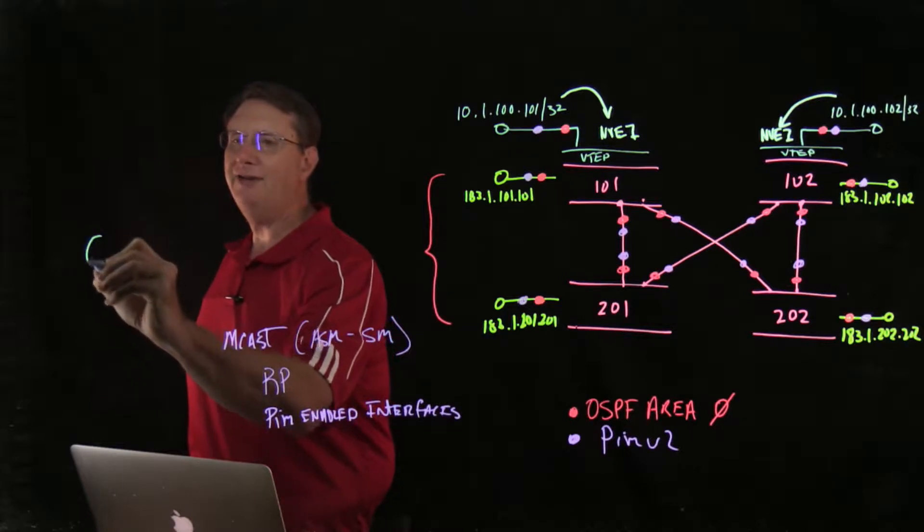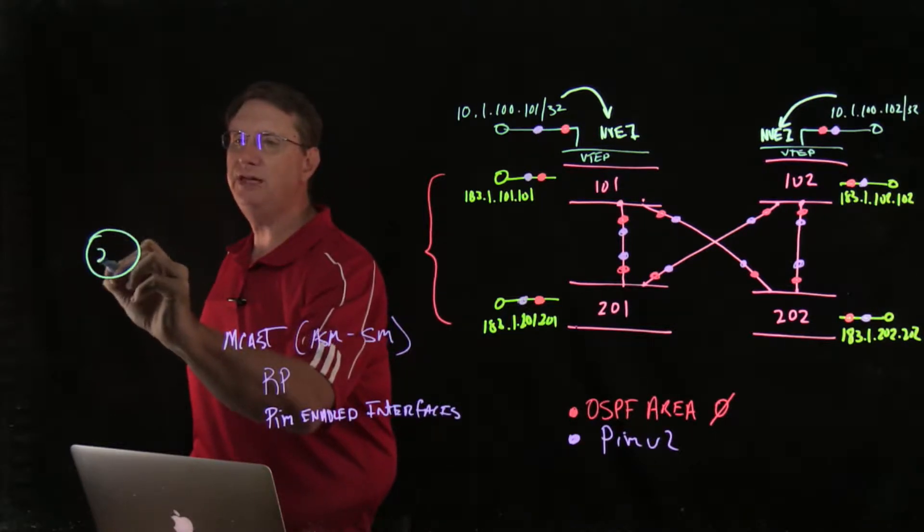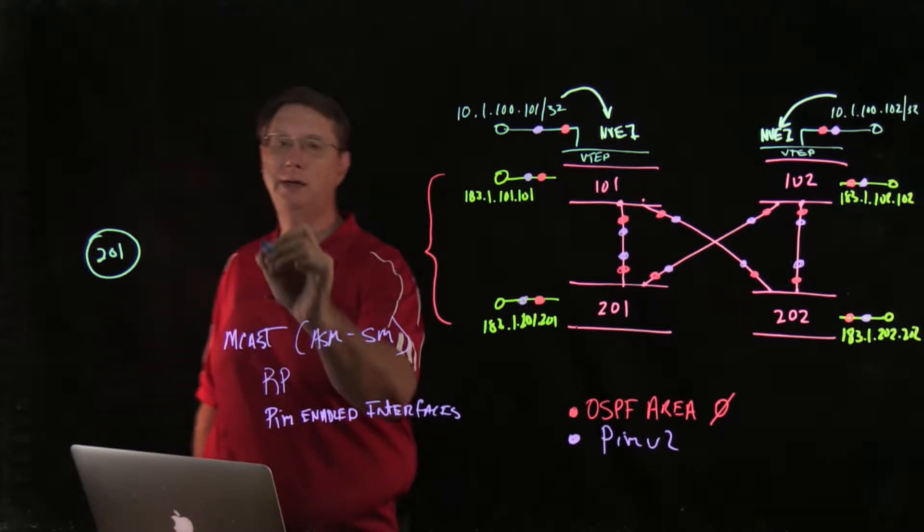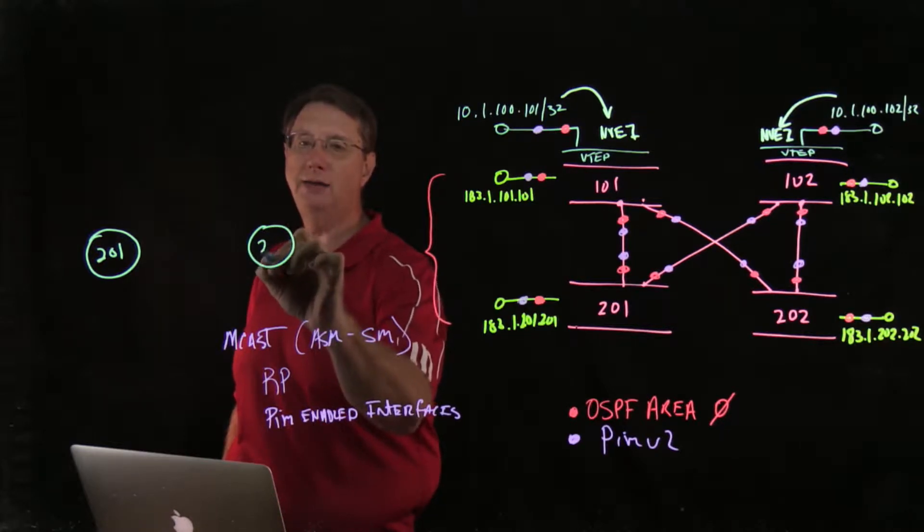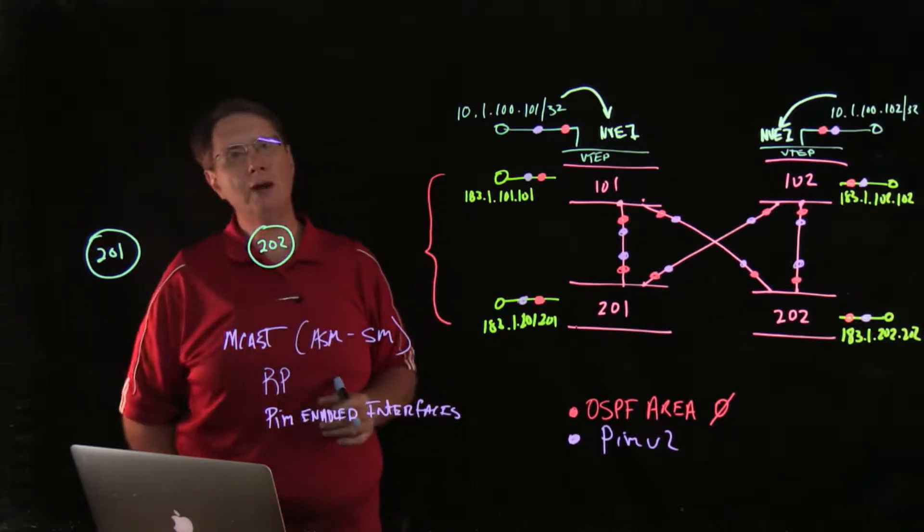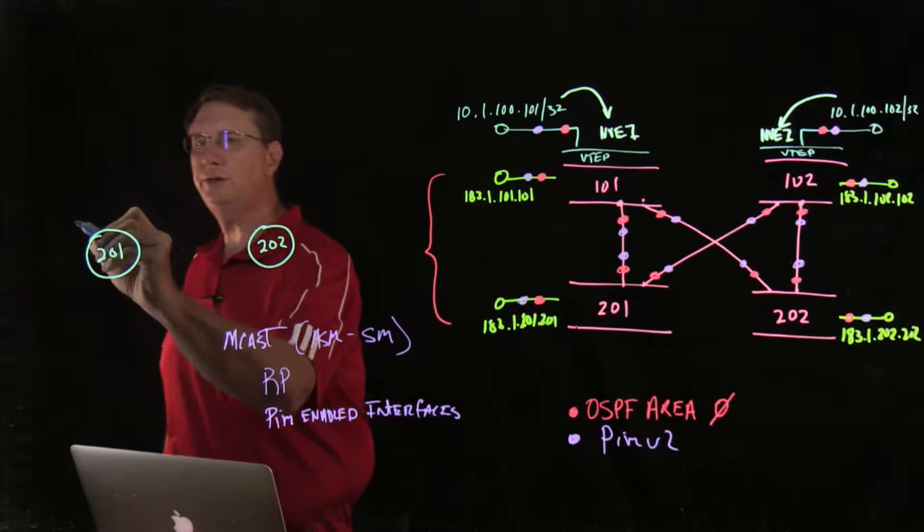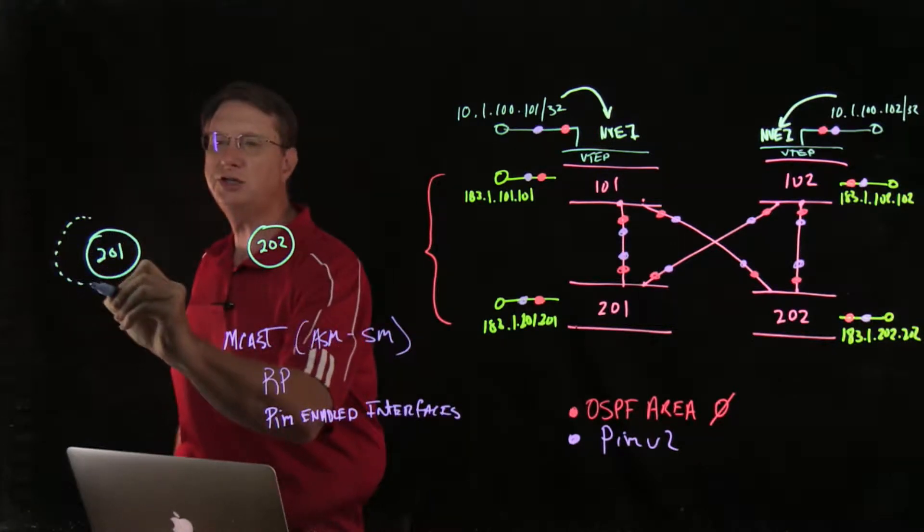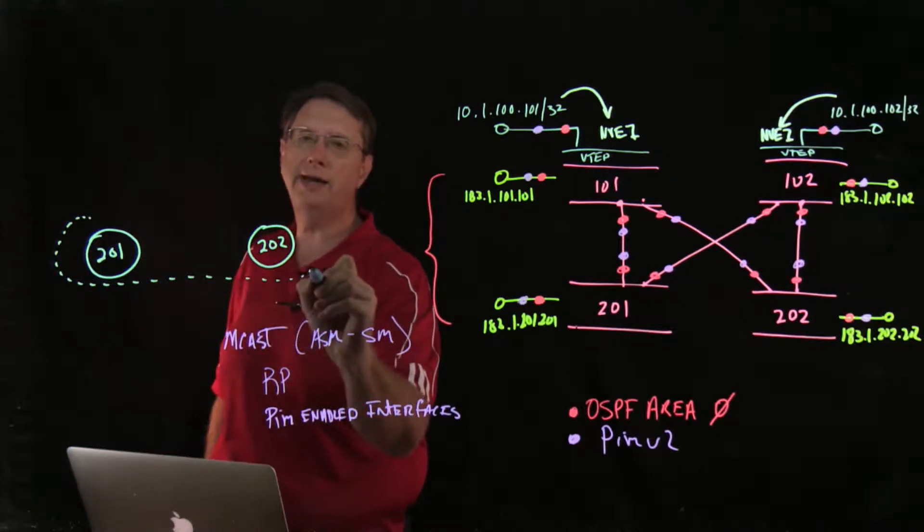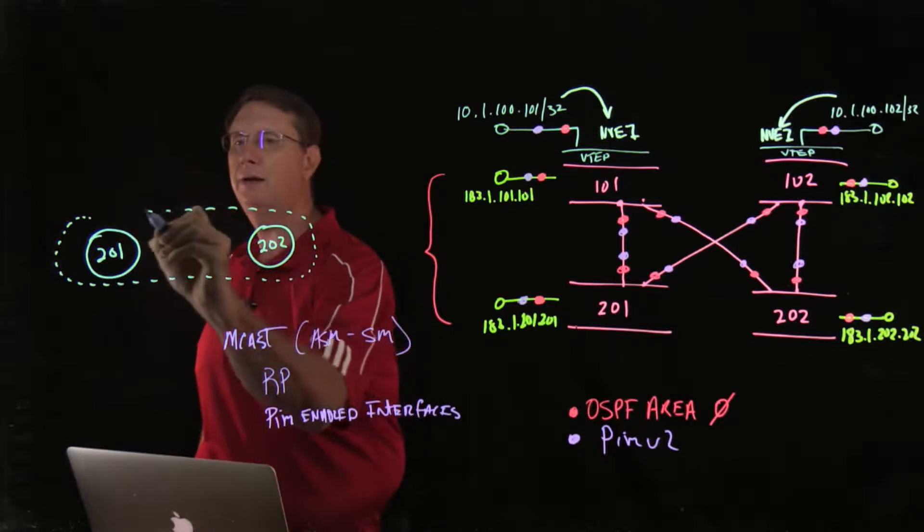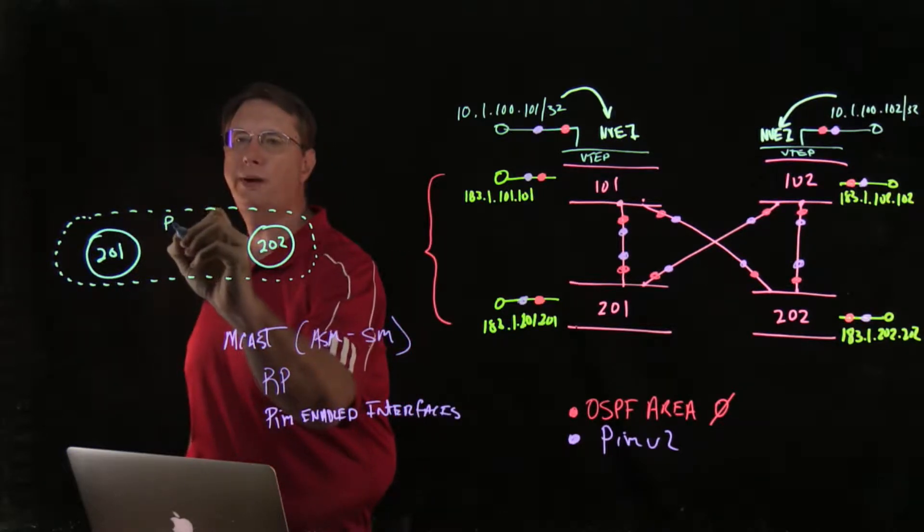What we have in our infrastructure is SPINE 201 and SPINE 202. And what I want to do is I actually want to configure these resources in such a way that they are going to provide my rendezvous point services.